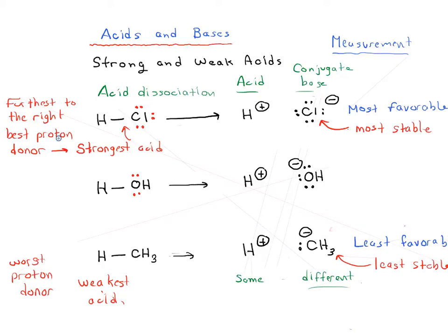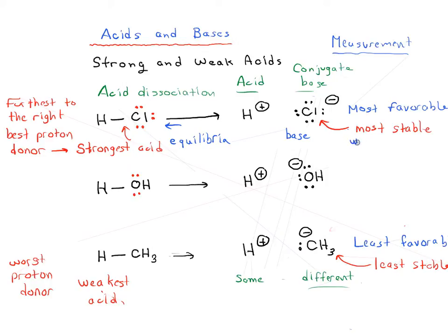So far I've only talked about the reaction going from left to right, but we haven't talked about the reaction going in the opposite direction — because these reactions are actually reversible equilibria. Just as we can have acid dissociation go left to right, we can have base association go right to left. Our base can react with our acid to give HCl, acting as a base. Because this reaction proceeds furthest to completion, Cl minus is the least favorable base — the weakest base — least likely to go from right to left.